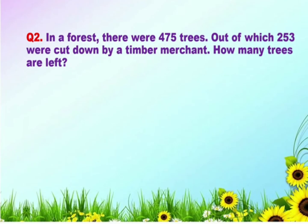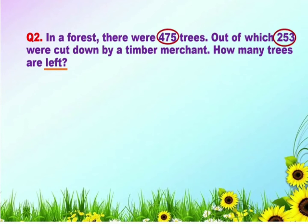Now let us take another example. In a forest there were 475 trees, out of which 253 were cut down by a timber merchant. How many trees are left? Here we will identify and underline the keyword, that is 'left', and then circle the numbers in the statement, that is 475 and 253.